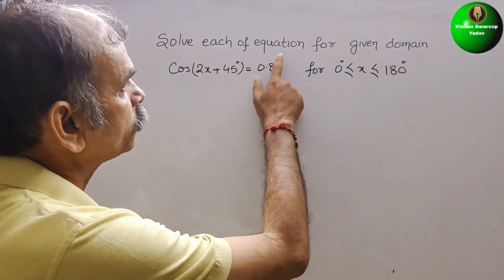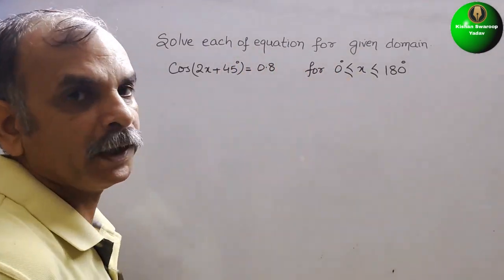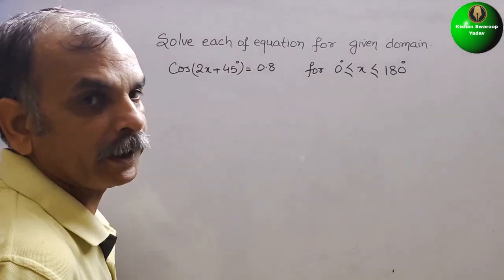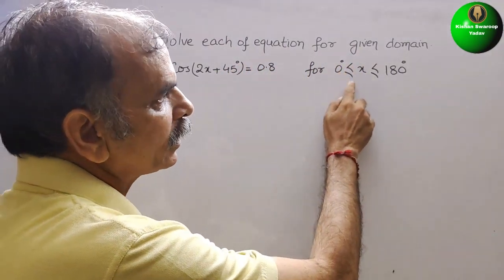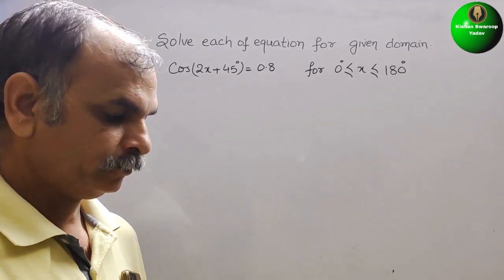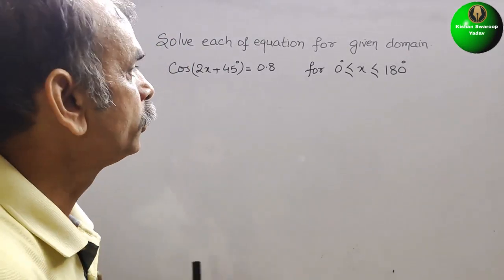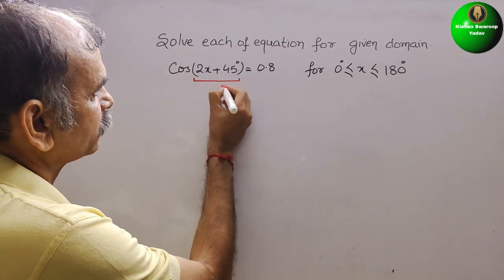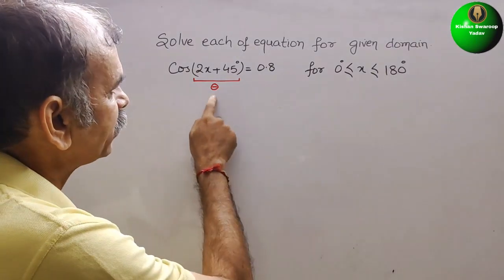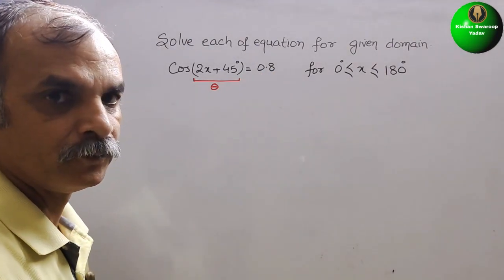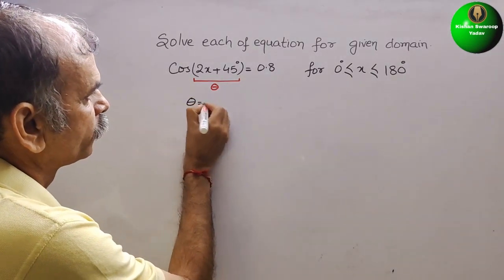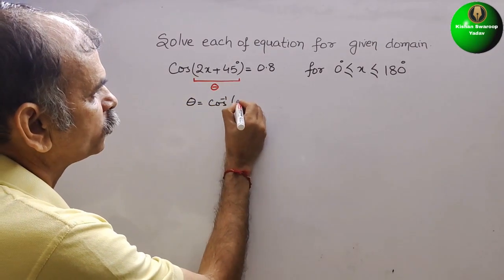The question is: solve the equation for the given domain. Here they have given cos(2x + 45°) = 0.8, for 0° ≤ x ≤ 180°. First, we make this as theta, so we get cos(θ) = 0.8. Therefore theta is cos inverse of 0.8.